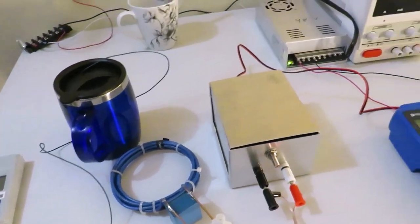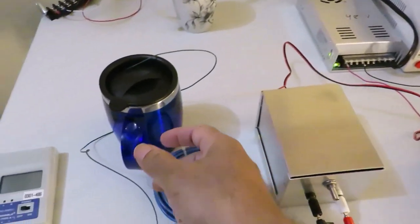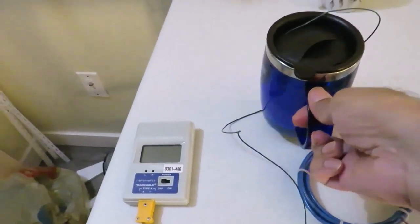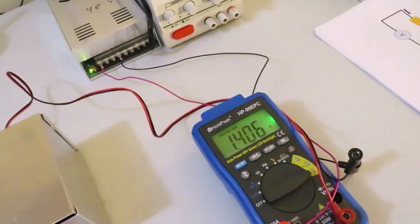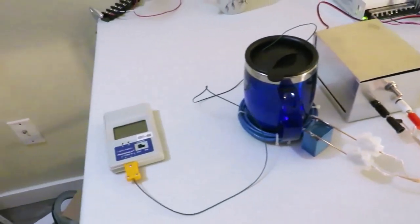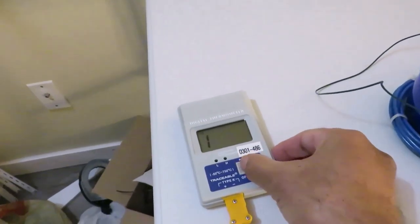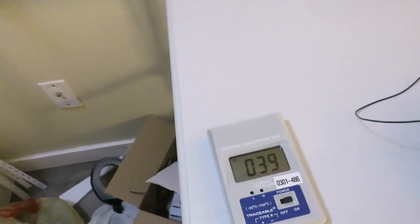It is already tuned at the resonance. And you can see nearly 79 or 78 milliampere. Now, when the mug is placed, it is 1.4A. I am turning on the temperature meter. And it is now 39 degrees centigrade.